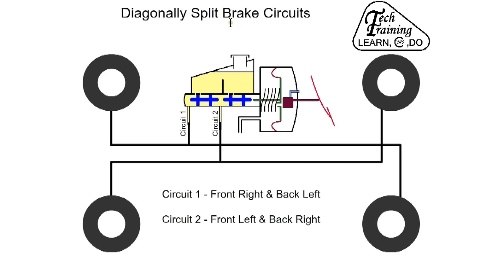With diagonally split brakes, two circuits are used. Circuit one, front right and back left. Circuit two, front left and back right. If a leak occurs on one circuit, the car can still be stopped with the other circuit.